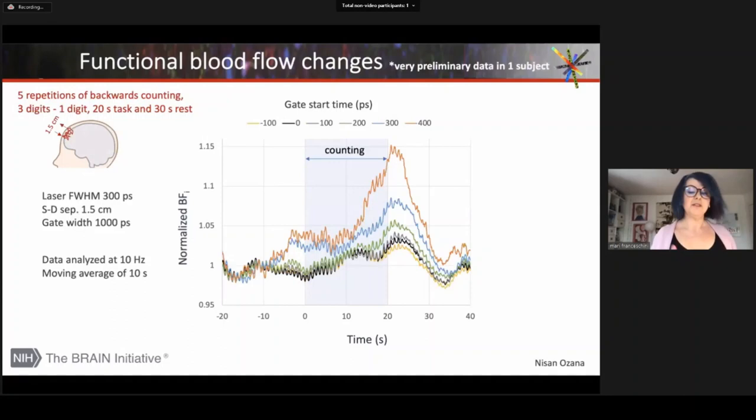More important for the final application is measuring brain activity. These are very preliminary data on one subject. We asked the subject to count backward, subtracting one digit from a three digit number. We did it five times for 20 seconds each. And you can see at late gate, there is a nice blood flow increase during the brain activity. So these promising preliminary data are just the beginning, and we are continuing and doing more experiments.